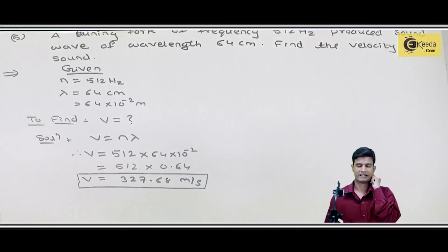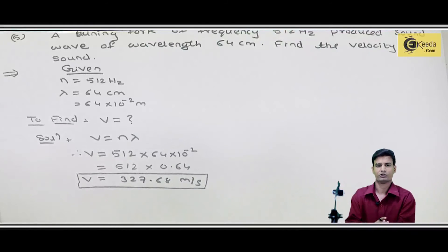So this is my final answer. The velocity is 327.68 meter per second. What was given? Frequency was given, lambda was given, and velocity had to be found. We used the formula V equals to N into lambda, substituted the values, and calculated the final answer.